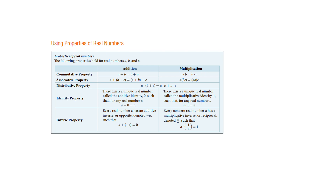The associative property is the idea that if it's just addition, it doesn't matter who you associate with first — whether you associate the a and b or the b and c. You have your choice because it's whatever's most convenient for you to group them that way. The same is true with multiplication. Two times three times four, you could do those in any order and you're going to get the same number.